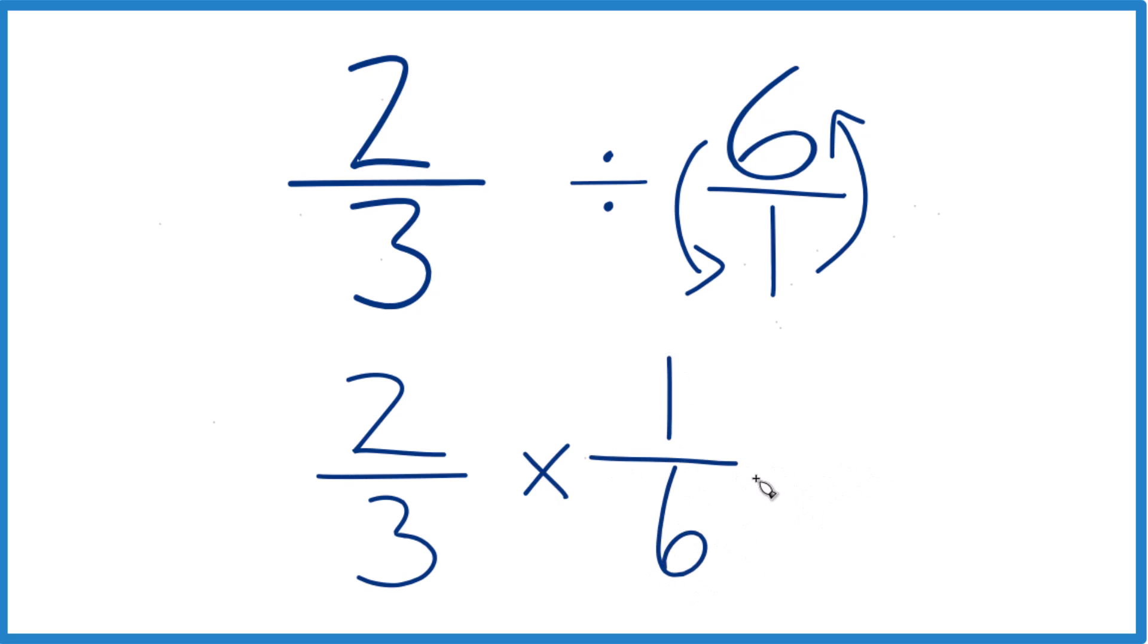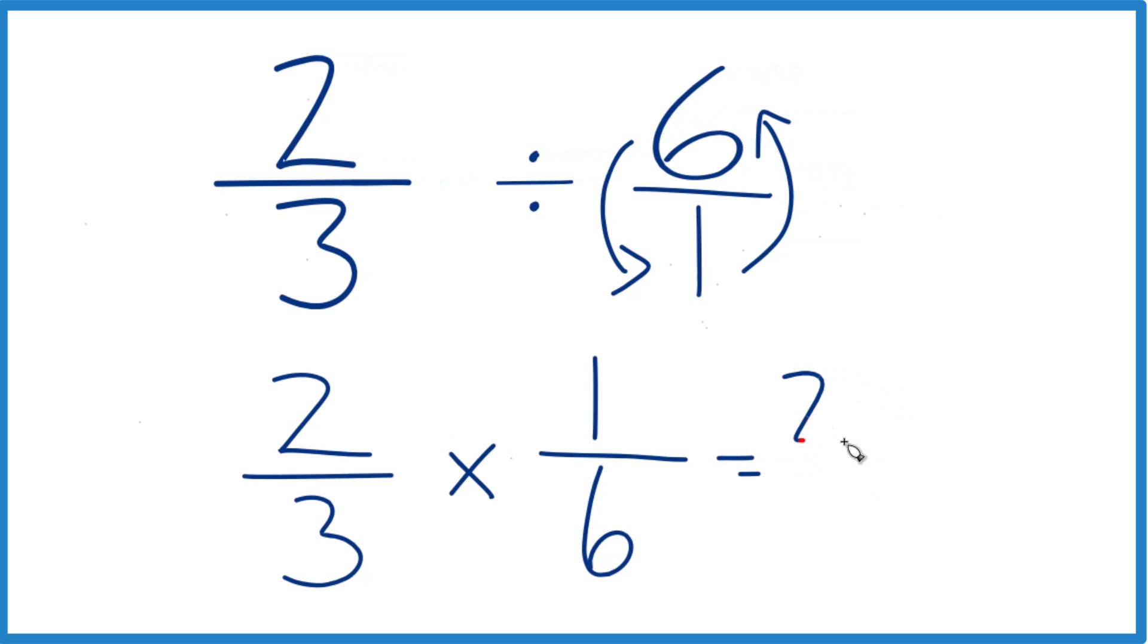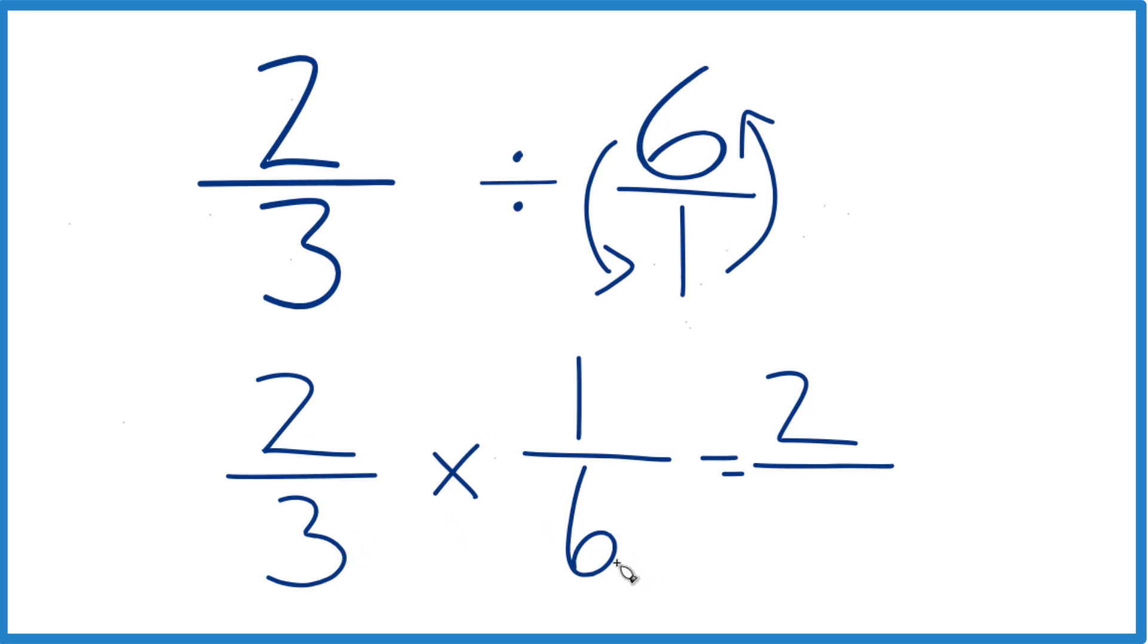And now we can just multiply the numerators. Two times one, that'll equal two, and then three times six. For the denominators, three times six is 18. So two-thirds divided by six is two-eighteenths.